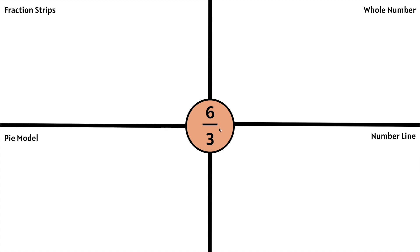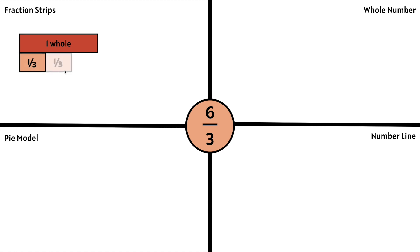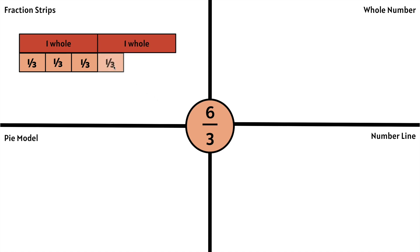6 thirds is a fraction greater than 1. Let's use fraction strips to model 6 thirds. Let's make a whole for reference and count: 1 third, 2 thirds, 3 thirds makes 1 whole. We need 6 thirds, so let's keep counting: 4 thirds, 5 thirds, 6 thirds. 6 thirds makes 1, 2 wholes. So we can say that 6 thirds is the same thing as the whole number 2.